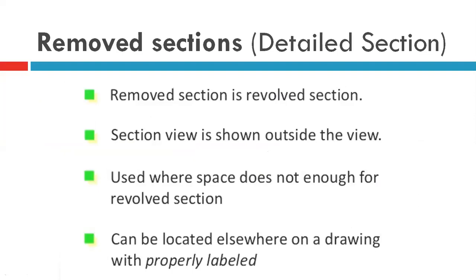The removed section is almost the same as the revolved section. The key difference is that the section view is shown outside the object view. In the revolved section, whatever section we draw is shown inside the object itself; here we show the same section outside the object. The third point: it is used where there is not enough space for a revolved section — sometimes the section and its dimensions are too small.